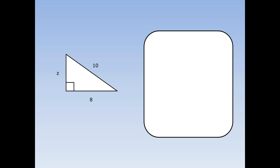Again, we've got an example where we don't know what one of the shorter sides is. So I'm going to write Pythagoras' theorem like this: A squared plus B squared equals C squared. This time I think I'll use A as the thing I don't know. So I fill in all my numbers — A I don't know, B is 8 as one of the shorter sides, and the hypotenuse C is 10. 8 times 8 is 64. 10 squared is 10 times 10 is 100. Now I've got A squared plus 64 equals 100.